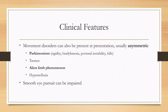Movement disorders can also be present at presentation and are usually asymmetric. Parkinsonism is very common — you can see rigidity, bradykinesia, and postural instability with falls. There can be tremor, and you can also see alien limb phenomenon, where someone's arm moves by itself and the patient does not feel that they are moving it. Hyperreflexia can be present as well.